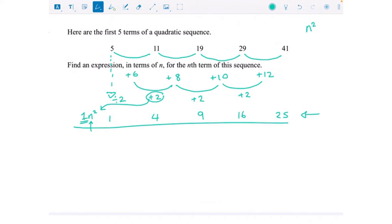I'm then going to do underneath how much more I need to get to the sequence I'm interested in. So 1n squared gets me 1, but I would need another 4 to get to 5. From 4 I need 7 more to get to 11. From 9 to 19 we need another 10, and from 16 to 29 we need another 13.